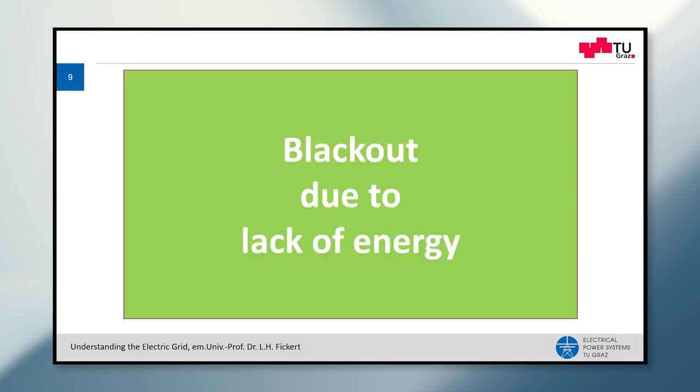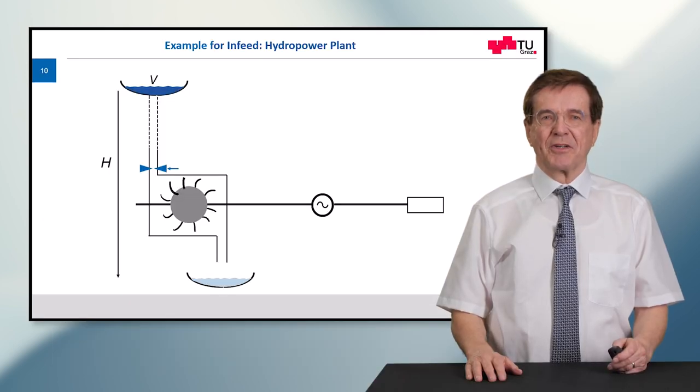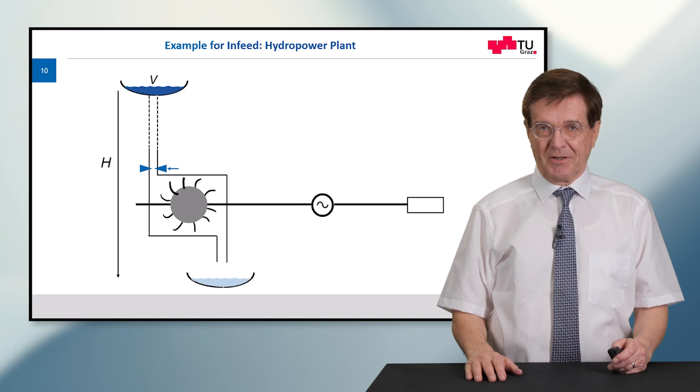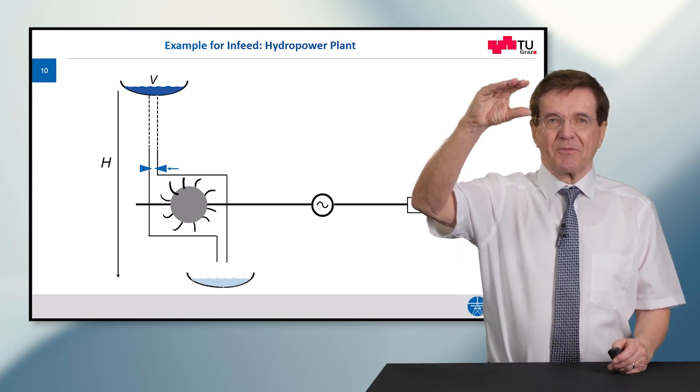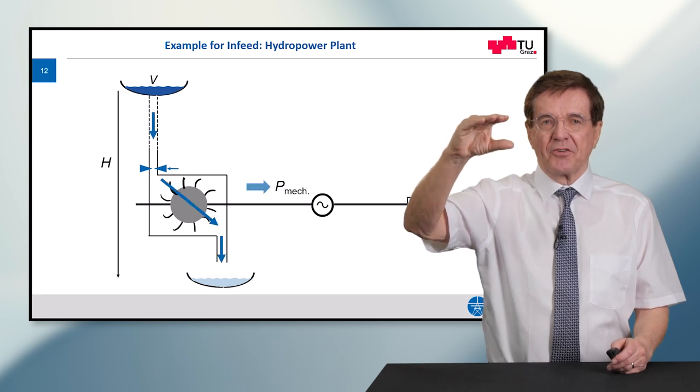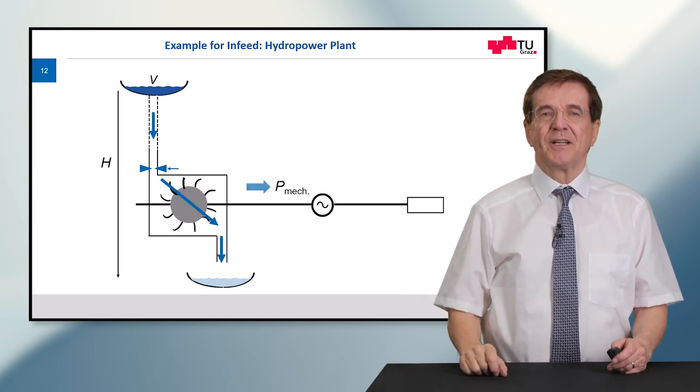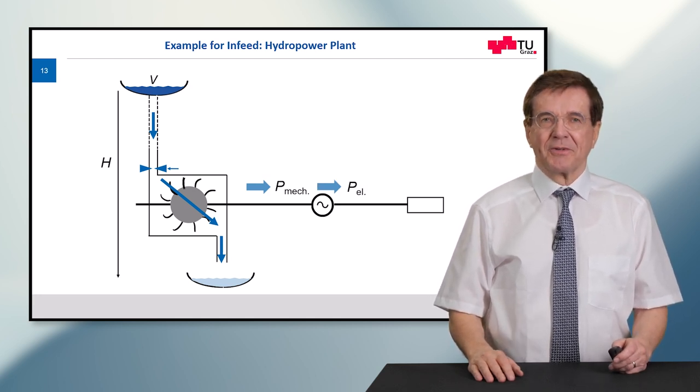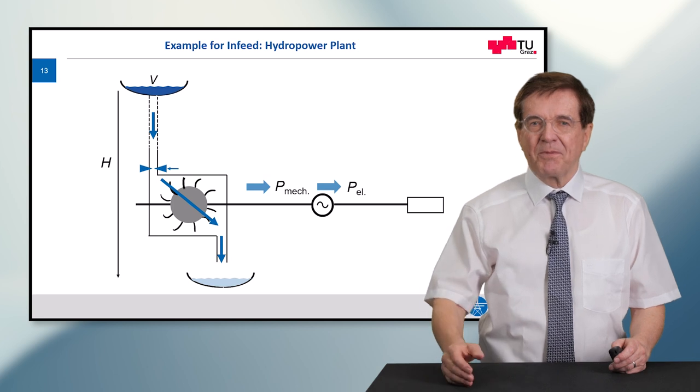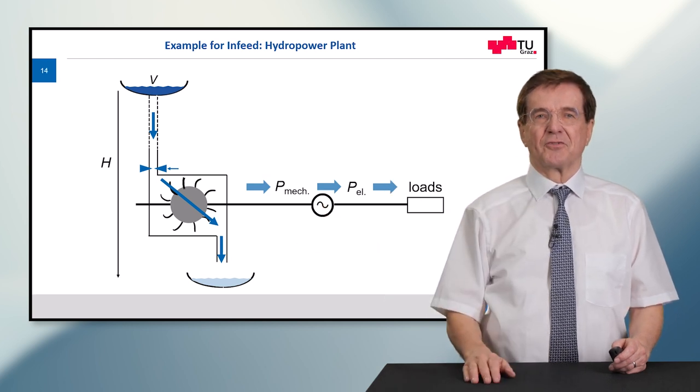Let's get started. Now let's start with an example for it in terms of a hydropower plant. In a hydropower plant, the water comes from the upper basin through the turbine, and while it does so, it converts the static energy into mechanical power. The generator turns it into electrical power, and this is fed onto the loads.